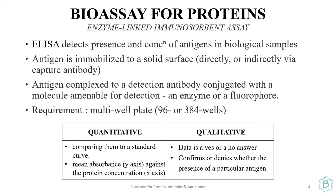A very popular bioassay for proteins is the enzyme-linked immunosorbent assay, which means ELISA. It helps you detect the presence or absence of a particular antigen in biological samples such as blood serum or any biologically derived samples. Your antigen or antibody is immobilized on a solid surface, and depending upon the presence and amount of antigen or antibody in your sample, you will get an antigen-antibody complex conjugated to a particular enzyme or fluorophore which you can detect.